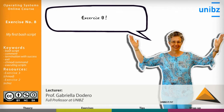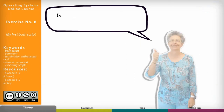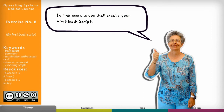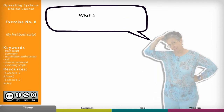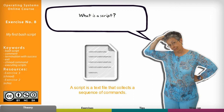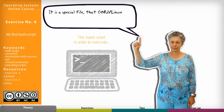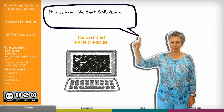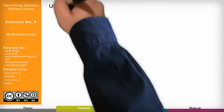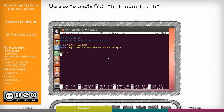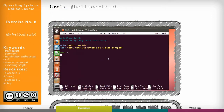Exercise 8: My first bash script. In this exercise you shall create your first bash script. A script is a text file that collects a sequence of commands. It is a special file that Linux, or better the bash shell, is able to execute. Use pico to create a file named hello_world.sh containing the following lines.